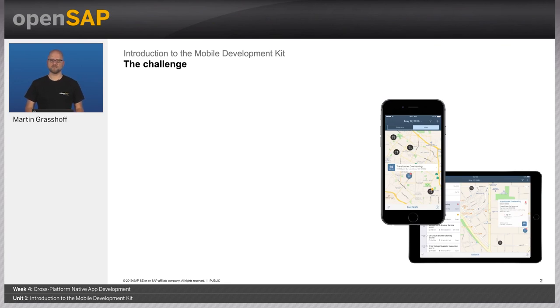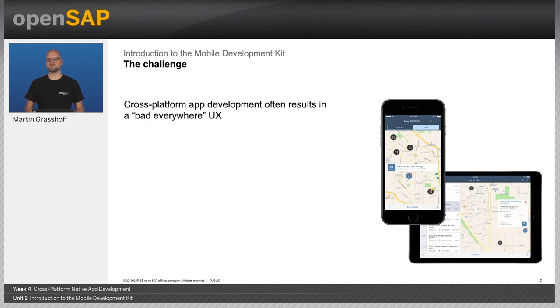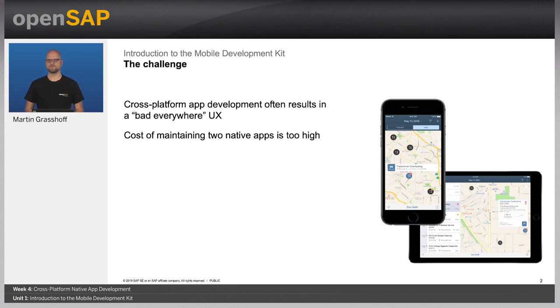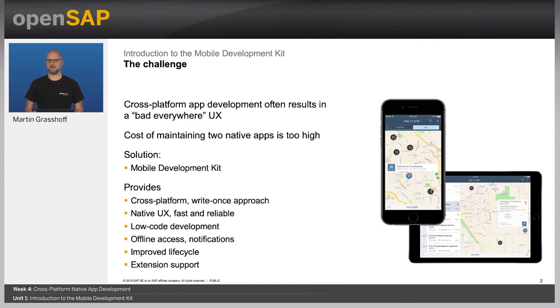Let's start with an introduction to the Mobile Development Kit. The challenge when building applications for multiple platforms at the same time is that it often results in bad user experience on both sides. On the other hand, it can be very expensive to build native applications for each platform. So we need a solution to solve this. The solution we came up with is the Mobile Development Kit — a cross-platform write-once approach. You write your application once and it runs natively on iOS and Android.